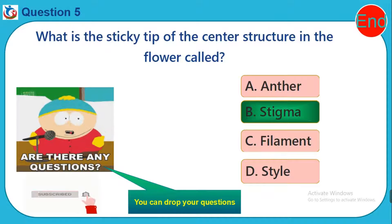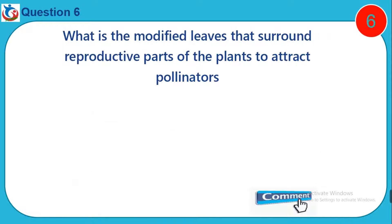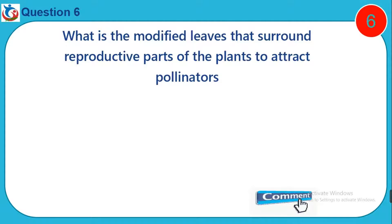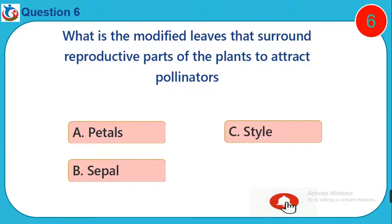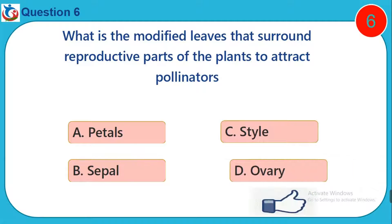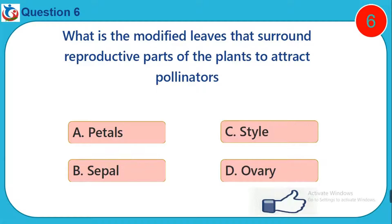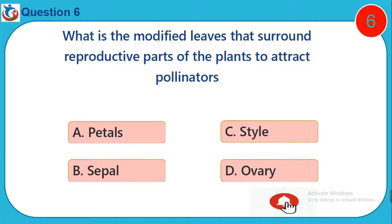Question 6. What are the modified leaves that surround the reproductive parts of the plant to attract pollinators? A. Petals. B. Sepal. C. Stamen. D. Ovary.